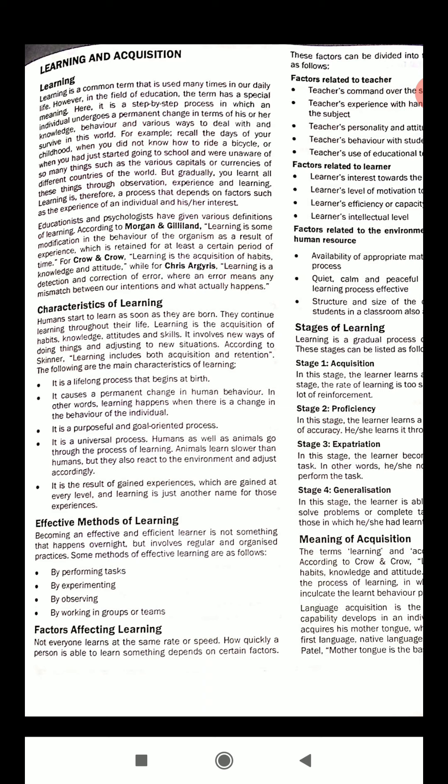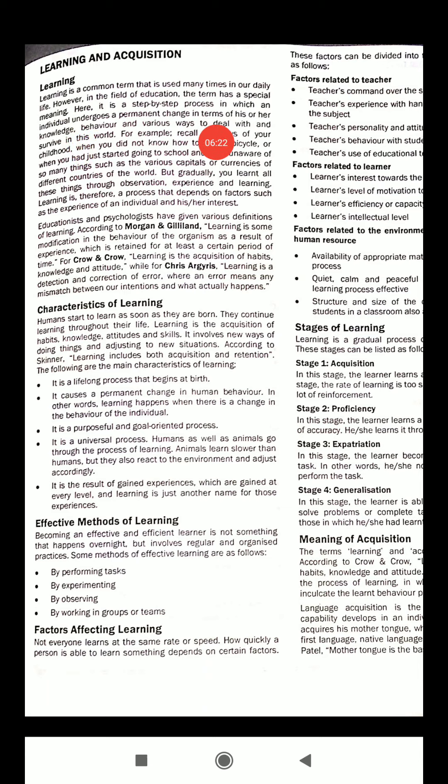For example, take a student of first class. If we give some hard words to read, they are literally unable to read them. But when they learn step by step — first the alphabets, then words — it becomes a step-by-step process in education. It is a step-by-step process in which an individual undergoes a permanent change in terms of knowledge. We learn lifelong behavior and various ways to deal with and survive in this world.